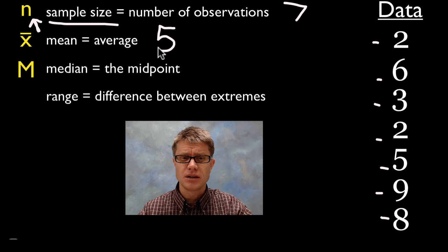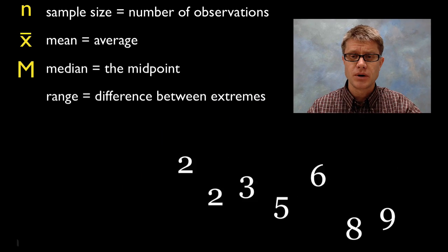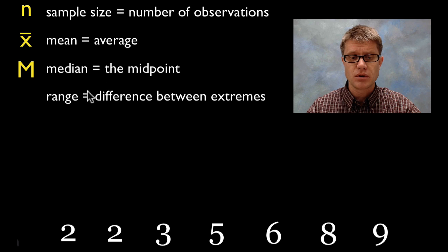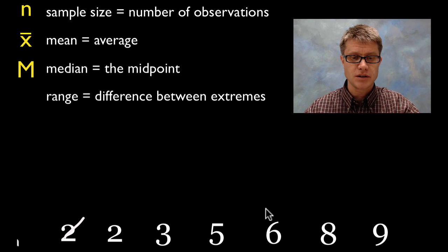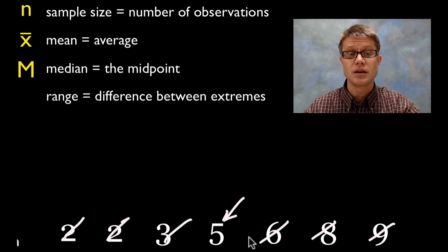How do you do the median or how do you find the midpoint? Well you have to line them up in order. When I line it up in order basically what I can do is I can cross it out from the side. I'll cross one out from the sides, I'll cross another one out from the side, and then we have the midpoint which is right here. So the median and the mean in this case is going to equal 5.